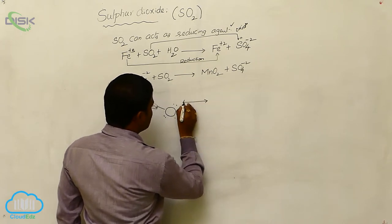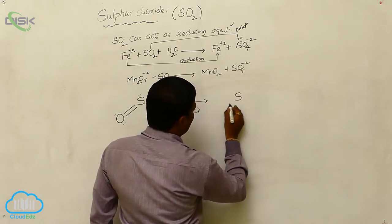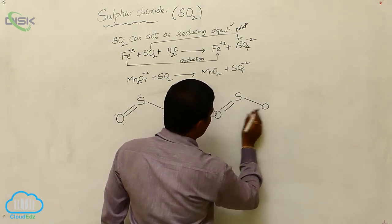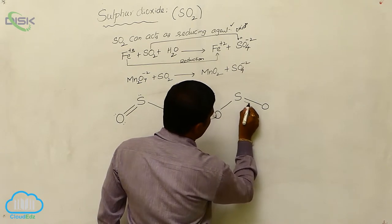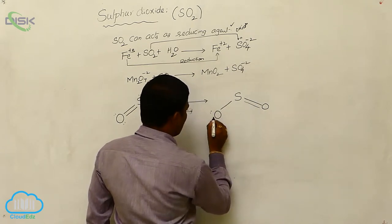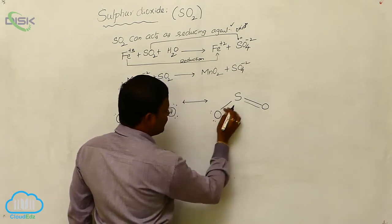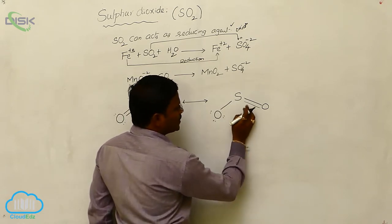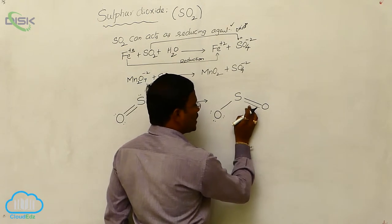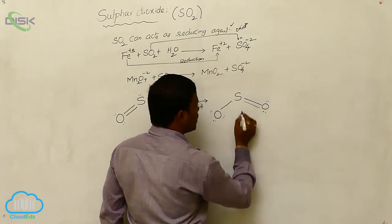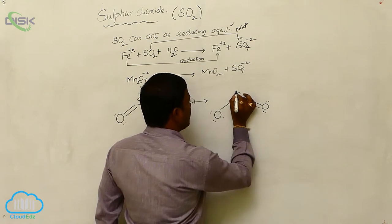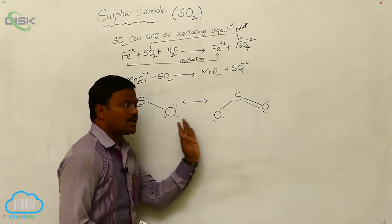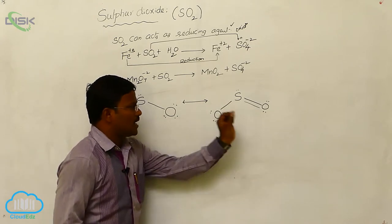Sulfur dioxide is available in resonance structures. Two canonical structures are possible for sulfur dioxide. One oxygen is connected with a single bond with three non-bonding pairs of electrons, and the other oxygen is connected with sulfur via a double bond with two non-bonding pairs of electrons, and sulfur has one non-bonding pair of electrons. These are the two canonical structures exhibited by sulfur dioxide.